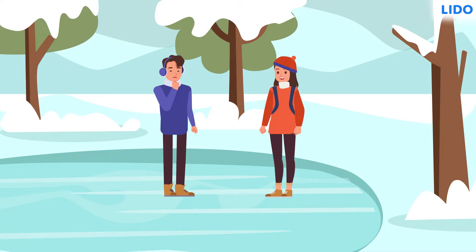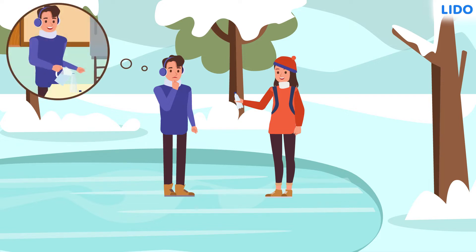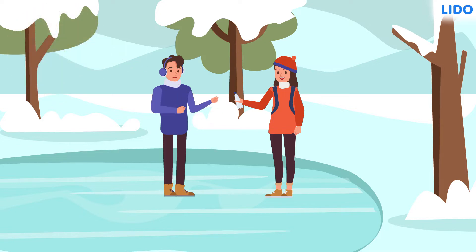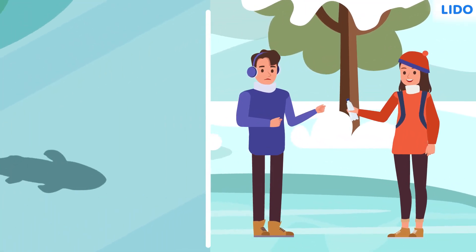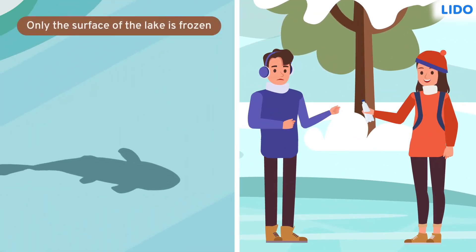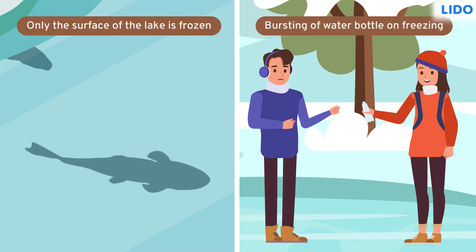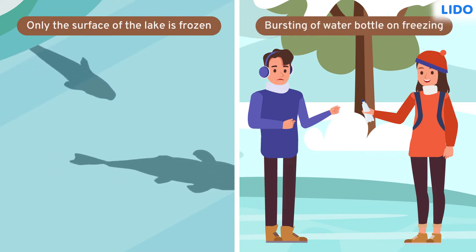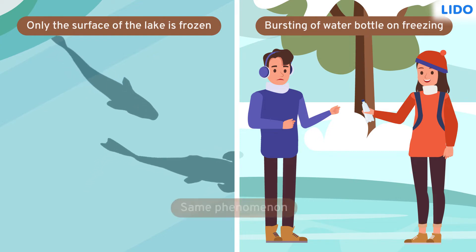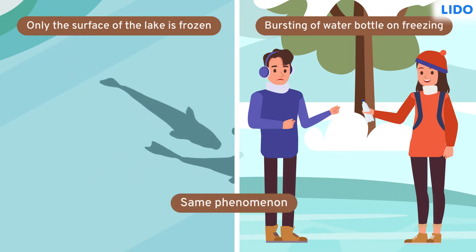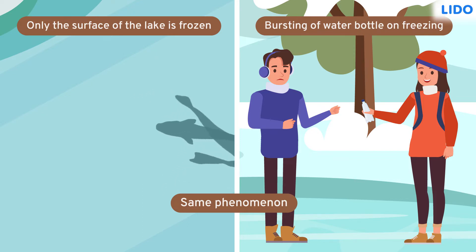But before he could ask her anything, Priya showed him a plastic bottle. The bottle was filled with water to its capacity when they left home. But to Ratul's amazement, the bottle was busted. He was now clueless. Priya told him something that blew his mind. She said the lake freezes only on the surface and the plastic bottle full of water gets busted — but because of the same reason. Just one phenomenon results in the fish being saved in the frozen lake and the bursting of the water bottle.